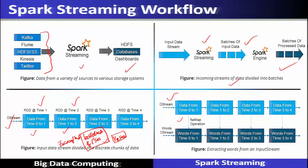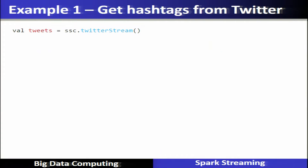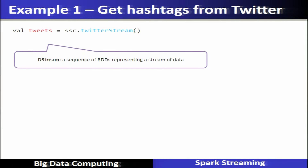For example, a flatMap operation can be applied on every DStream. When a flatMap operation is applied, it will produce different words divided in the form of a DStream of 1-second duration. When flatMap is applied to all cases, it will extract the words from the input stream.